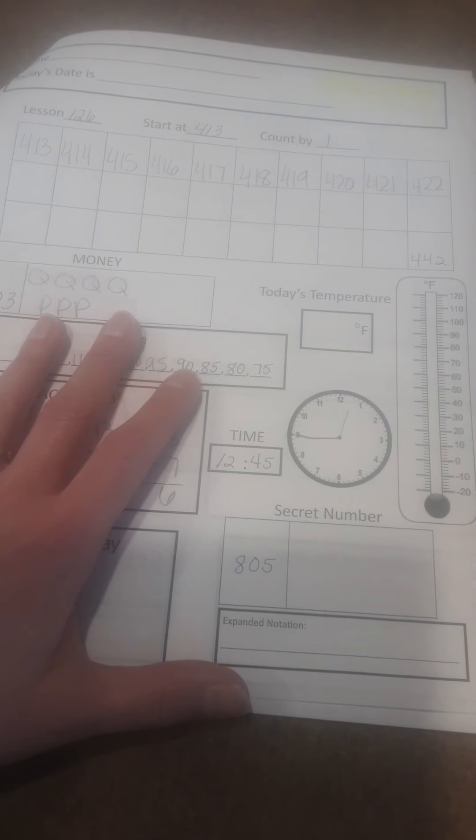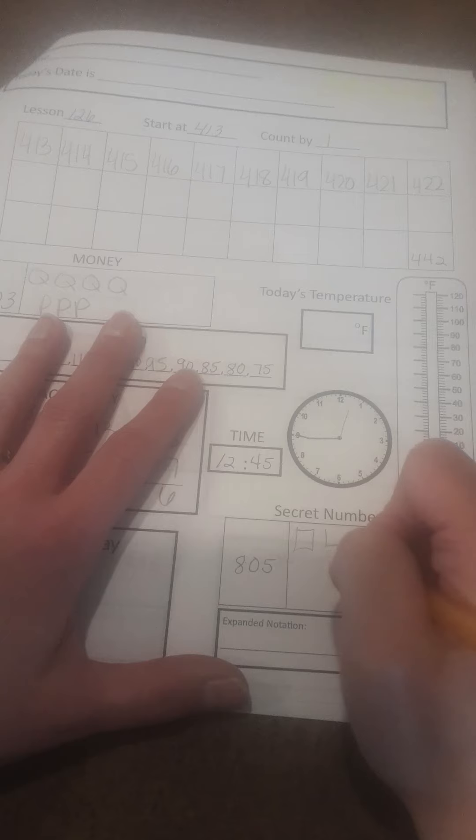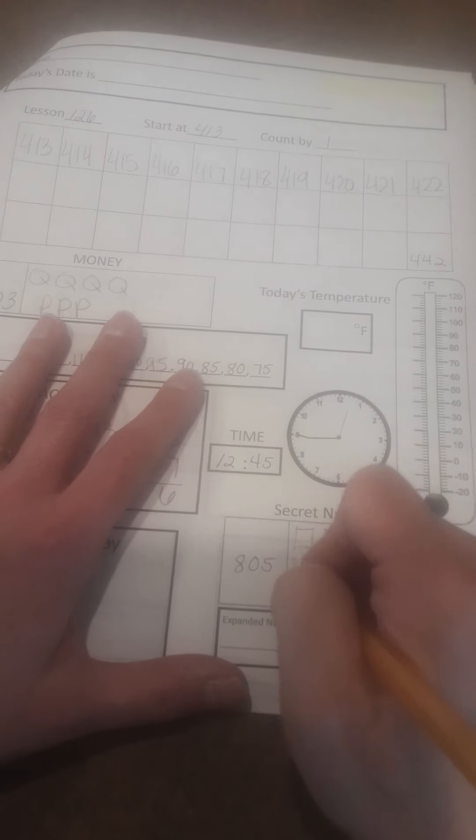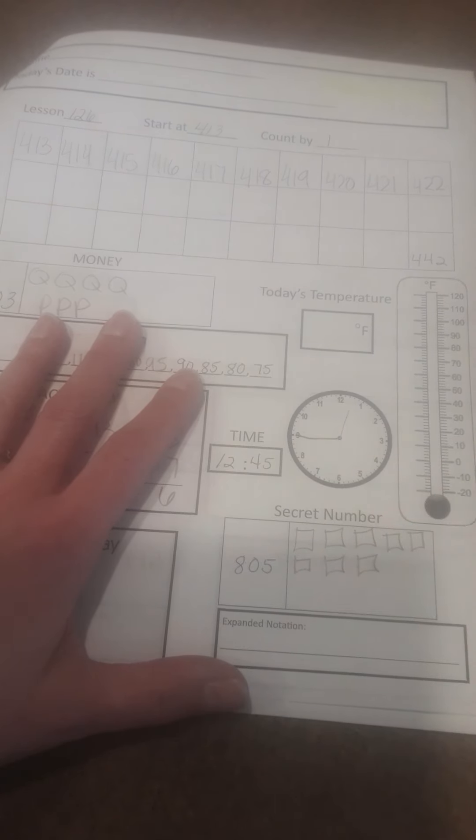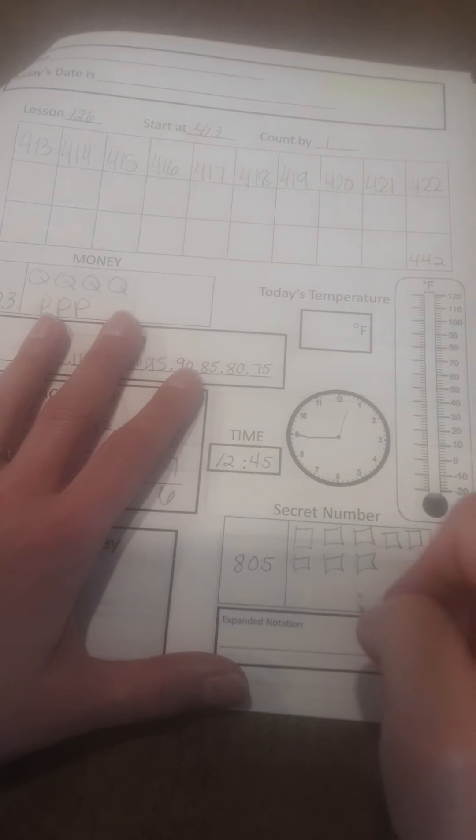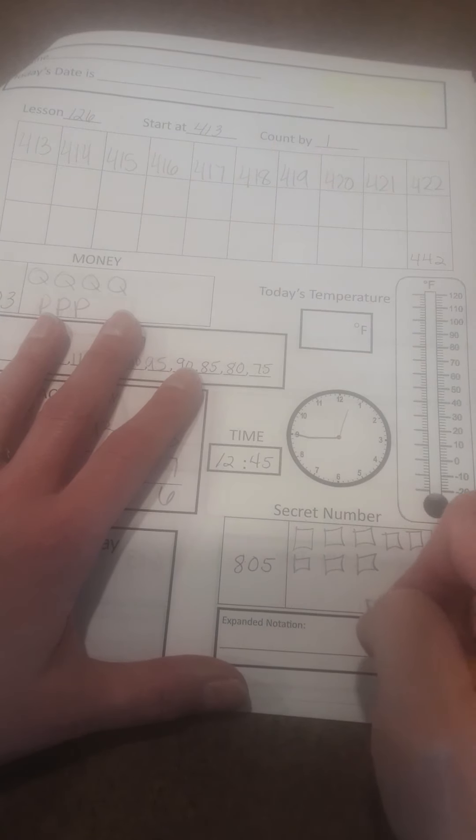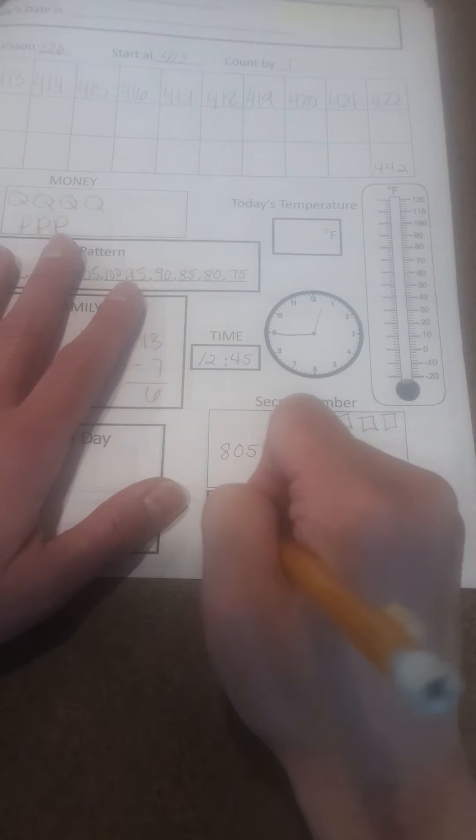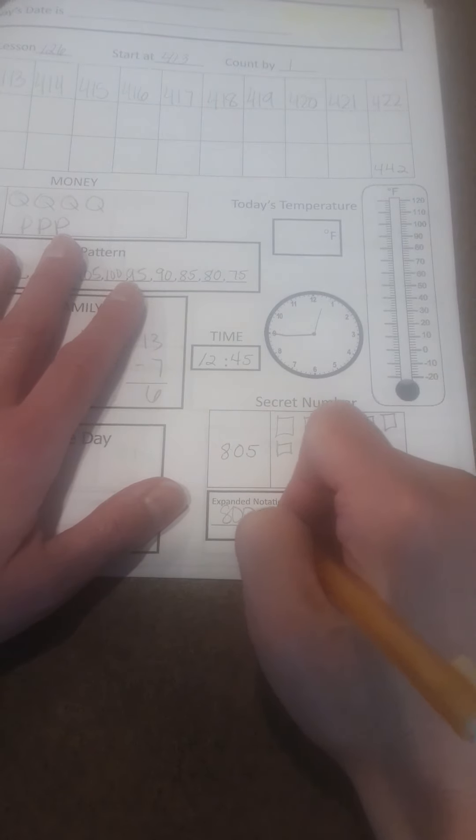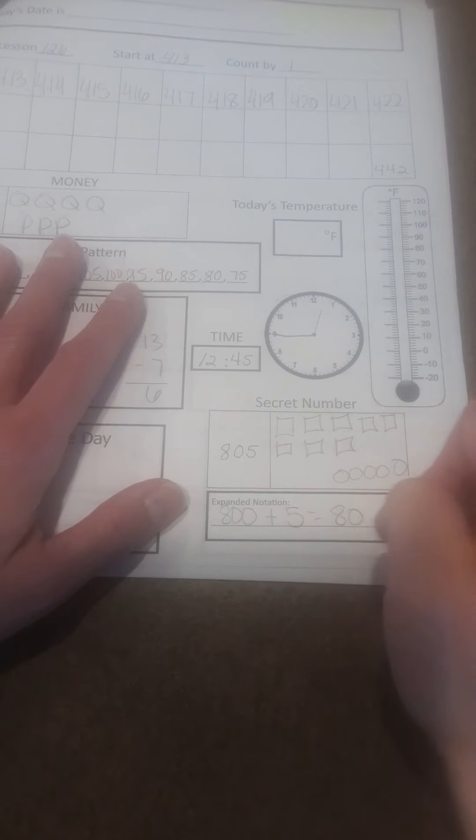Okay, secret number 805. 800s. And no 10s. And 5 ones. Expanded form would be 800. And then you can just do 5 equals 805.